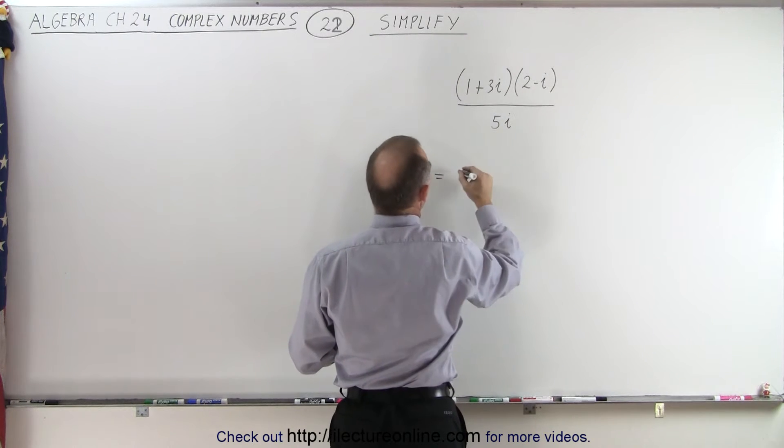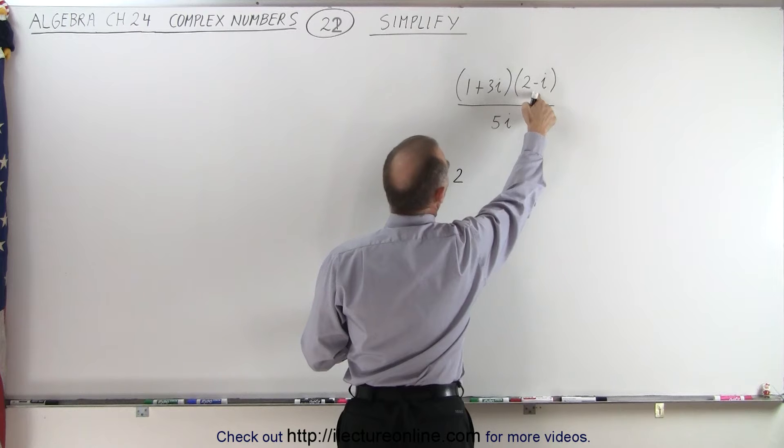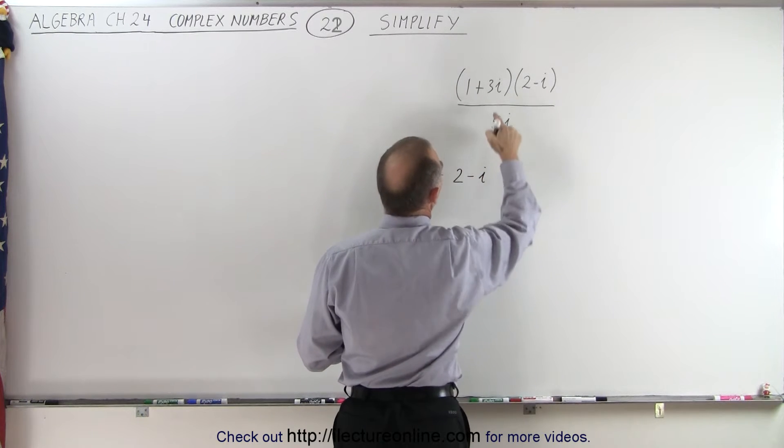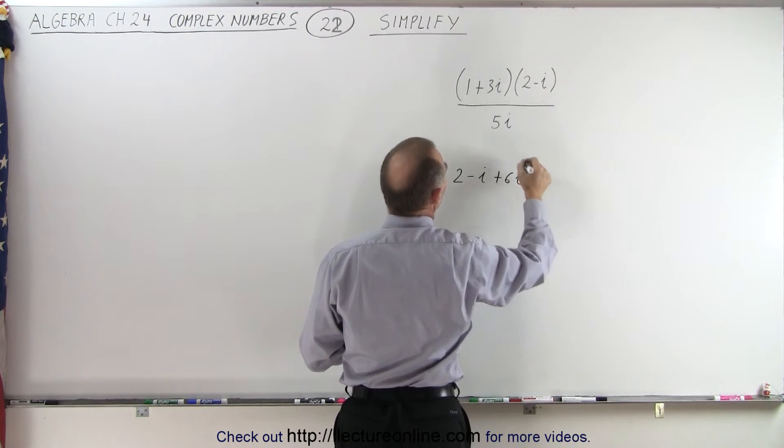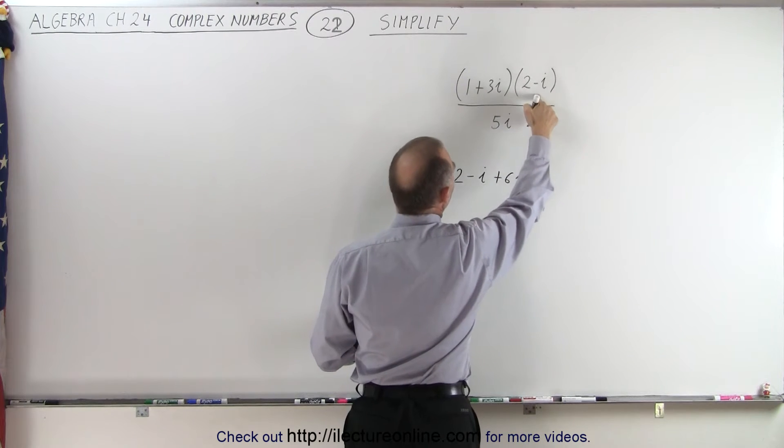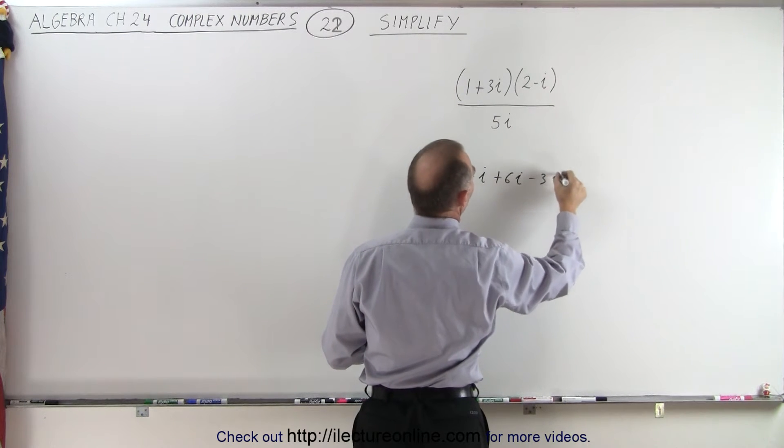So we have 1 times 2, 1 times the negative i, which is negative i, 3i times 2, which is plus 6i, and 3i times the negative i, which is a negative 3i squared.